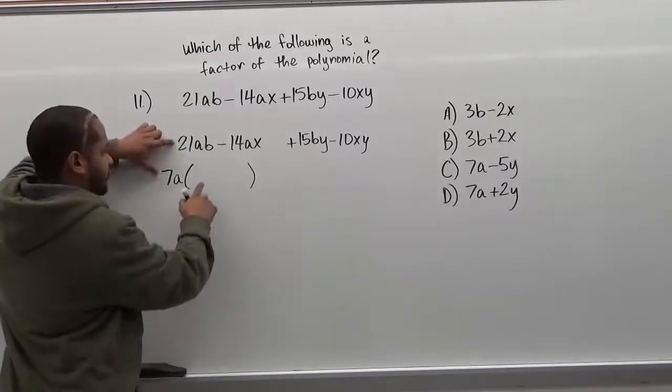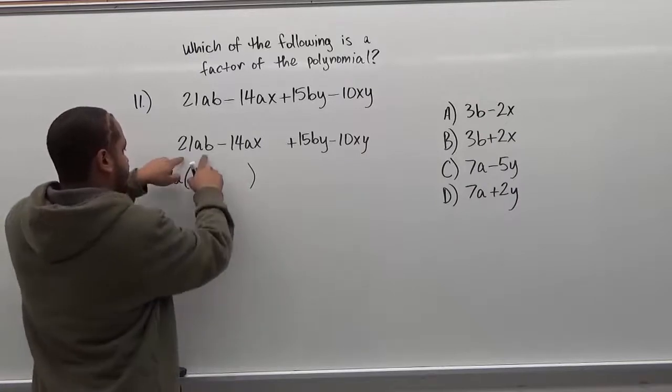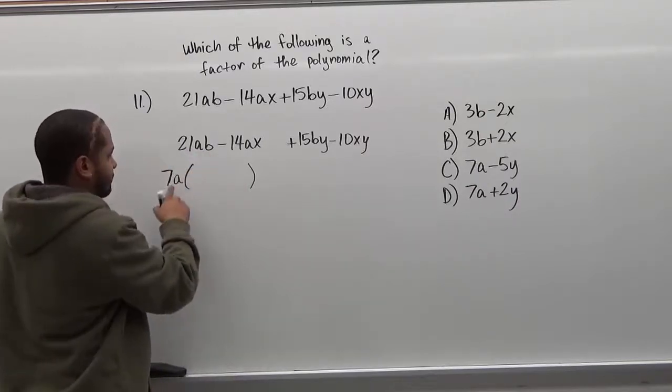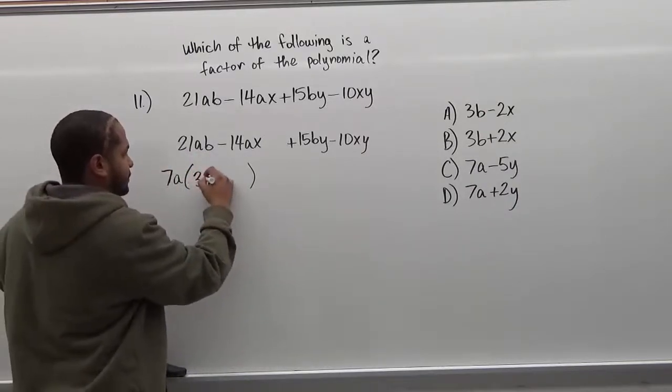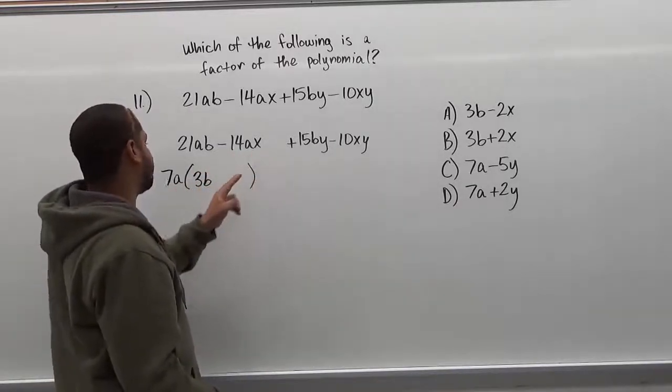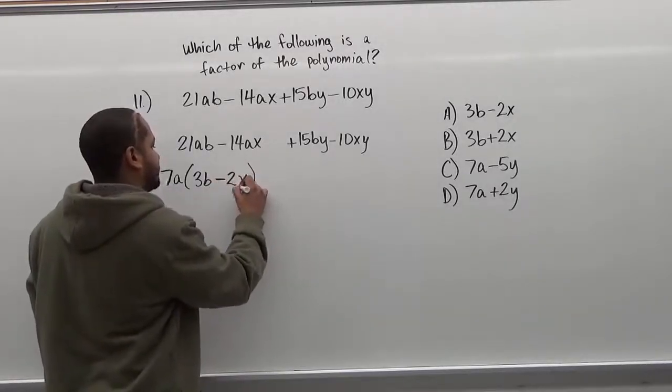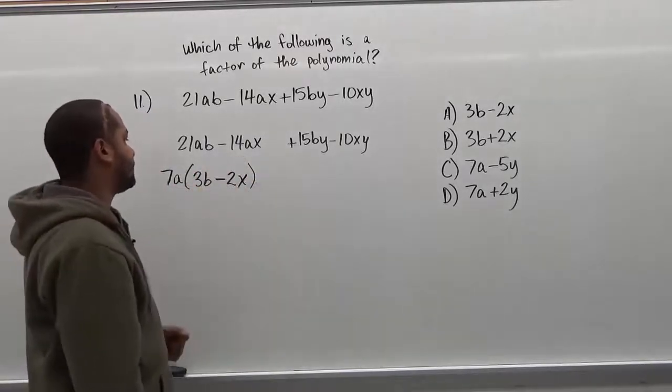A faster way to get the terms that we get inside the parentheses is simply dividing with the greatest common factor. So 21ab divided by 7a will give us just 3b. Dividing negative 14ax by 7a will give us negative 2x's. The a's will go away when we divide that term.